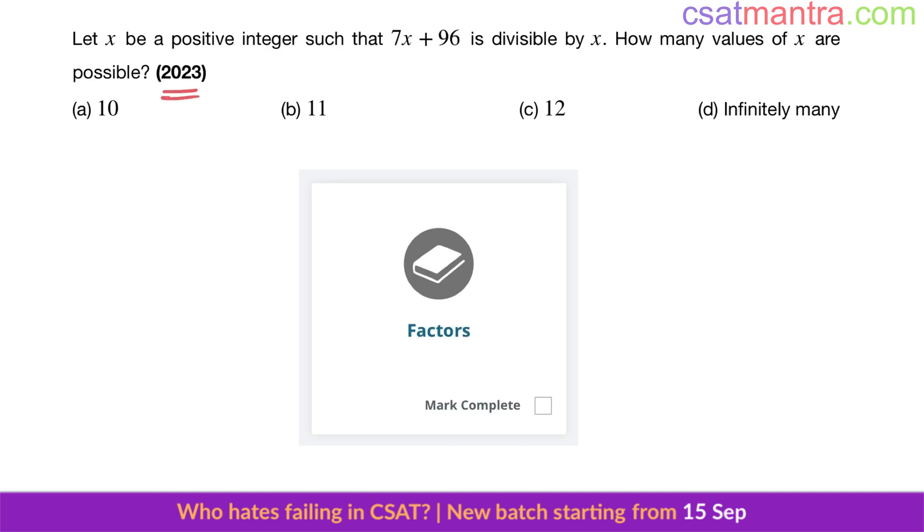This is a 2023 question based on factors from the number system chapter. Let x be a positive integer such that 7x plus 96 is divisible by x. How many values of x are possible?